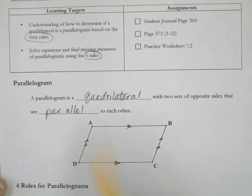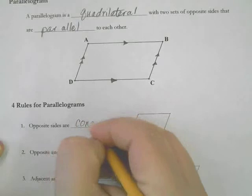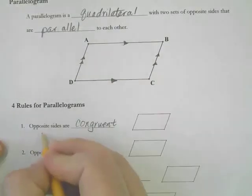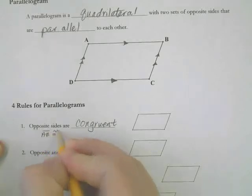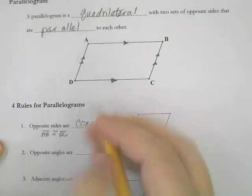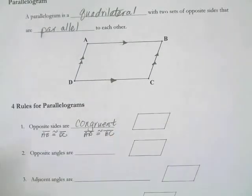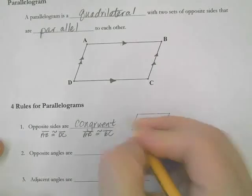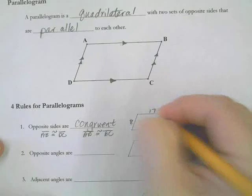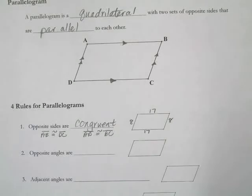This is a parallelogram and there's four rules we're going to learn about it. Rule number one is that opposite sides are congruent. Based on our picture, that tells me that AB, the top, is congruent to the bottom, which is DC. And it also tells me that the left, AD, is congruent to the right, BC. If I tell you that the left is 8, that means that the right is 8. If I tell you the top is 17, then that means the bottom is 17.